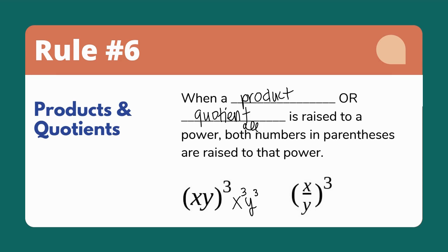And x divided by y all raised to the third becomes x to the third divided by y to the third.